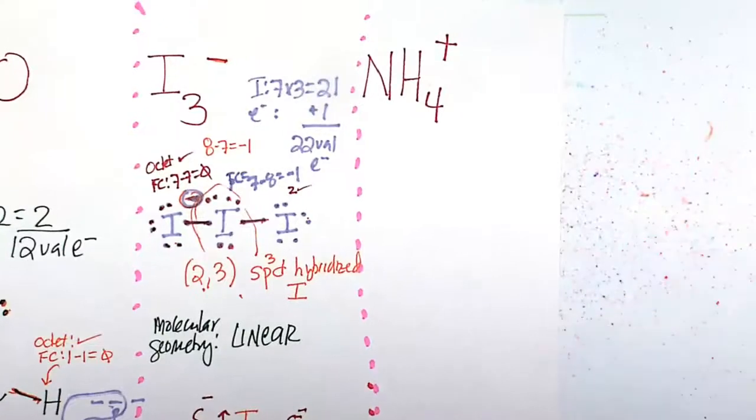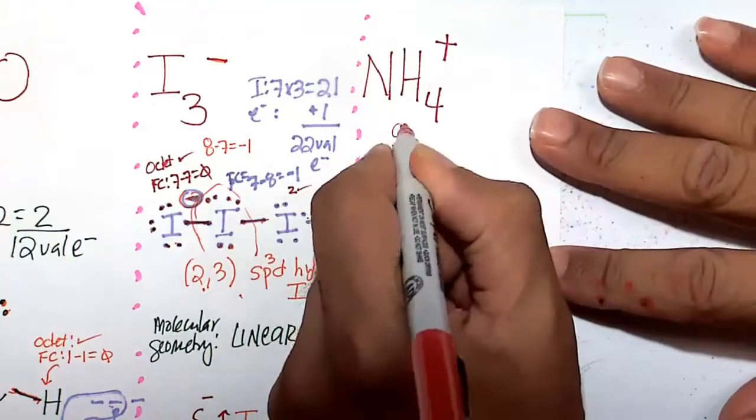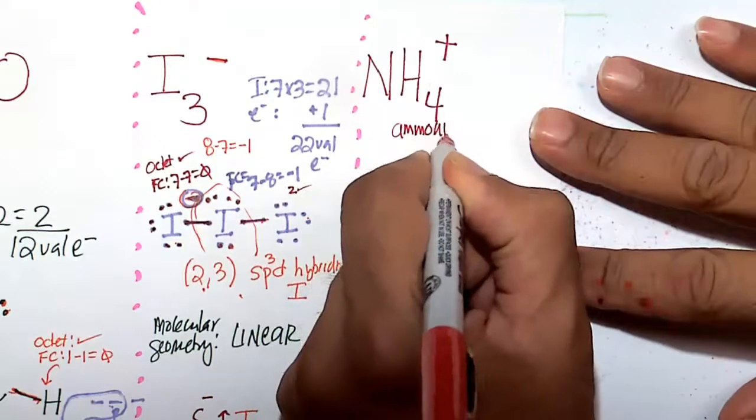Our next Lewis structure on this list is ammonium ion. Do not confuse this with ammonia, NH3. This is ammonium ion, the name of this Lewis structure.